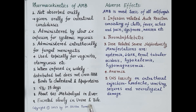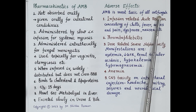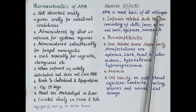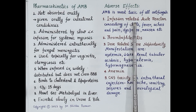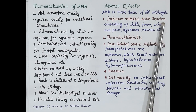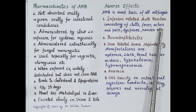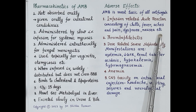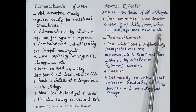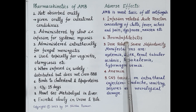Amphotericin B is the most toxic of all antifungals and is therefore used systemically only for serious life-threatening fungal infections. IV infusion causes infusion-related acute reactions manifested by chills, fever, aches and pain, dyspnea, and nausea. Use of antihistaminics or corticosteroids like hydrocortisone can reduce the severity of these reactions. Thrombophlebitis — inflammation of the injected vein — can also occur.